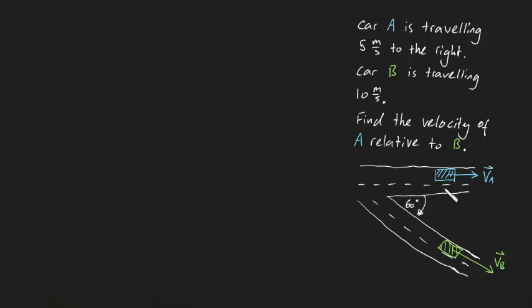So what's happening here? We've got car A just here drawn in blue and it's travelling 5 meters per second to the right. We've got car B in green and it's travelling 10 meters per second at this 60 degree angle just here.